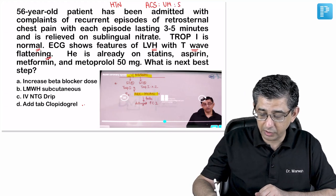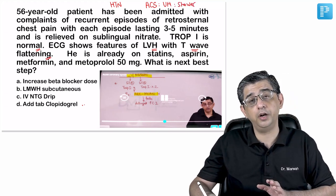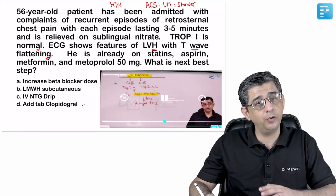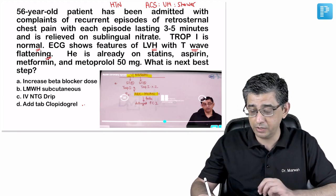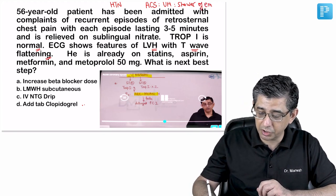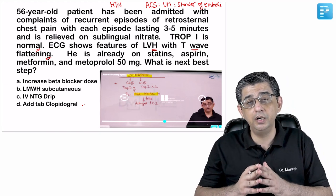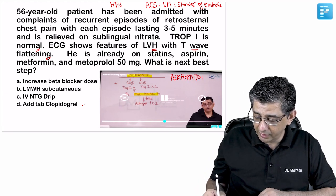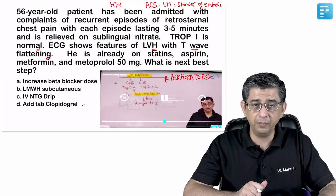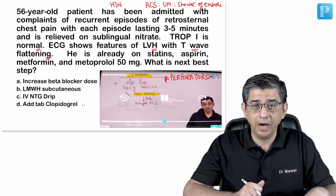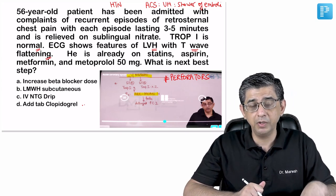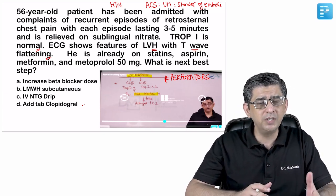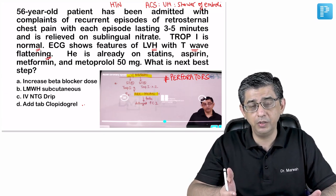In unstable angina, a clot forms in the coronary artery and gets broken down by the body's anti-clotting system — protein C, protein S, antithrombin 3 — into small pieces, causing a shower of micro-emboli that land in ultra-small perforator vessels. Because only ultra-small vessels are involved, necrosis is minimal initially, so biomarkers remain normal in these patients.